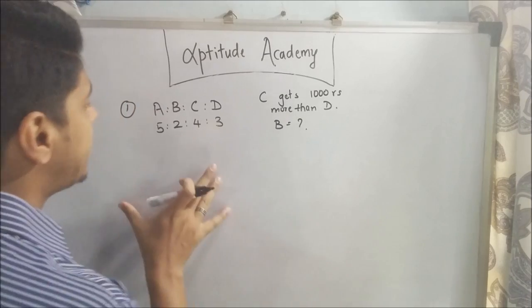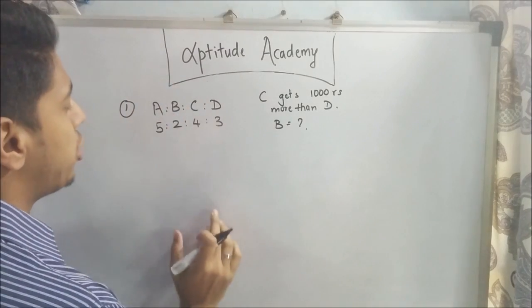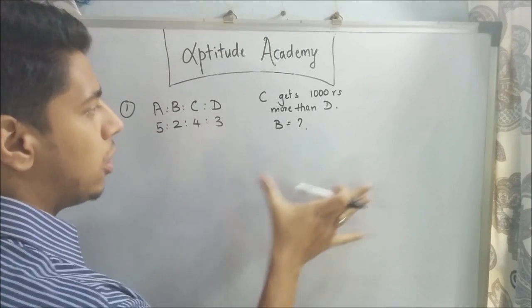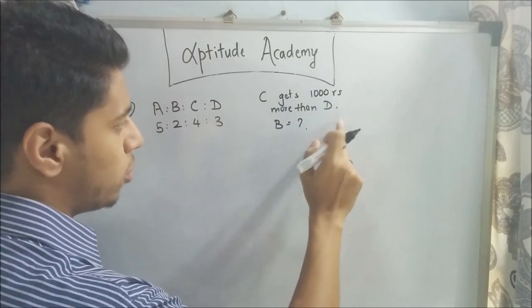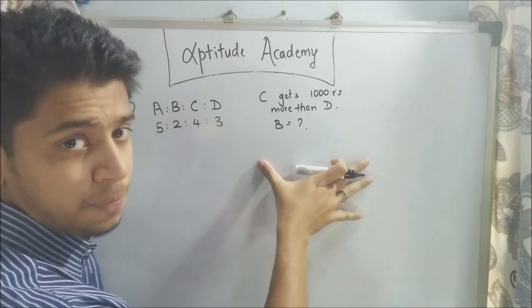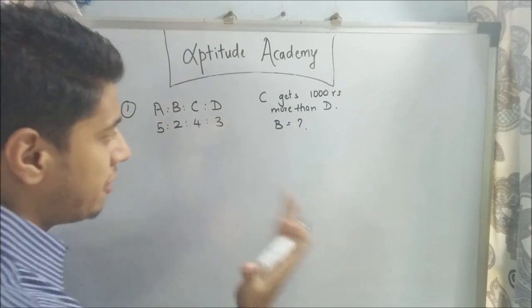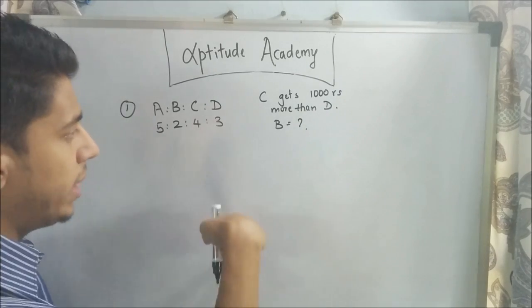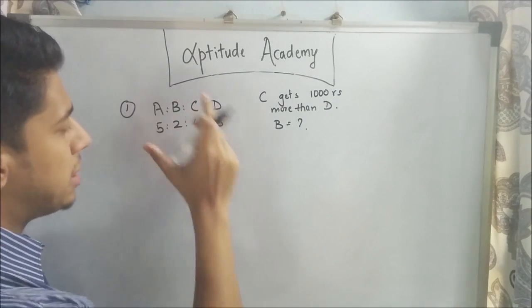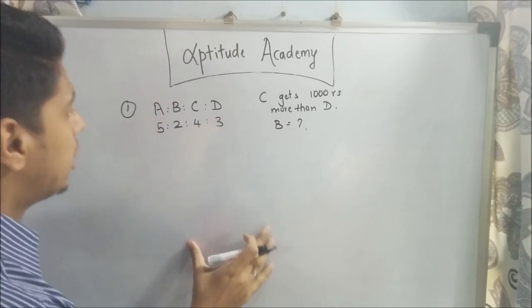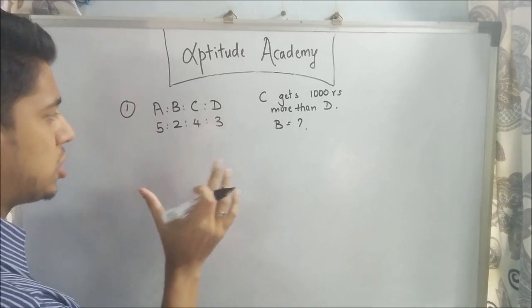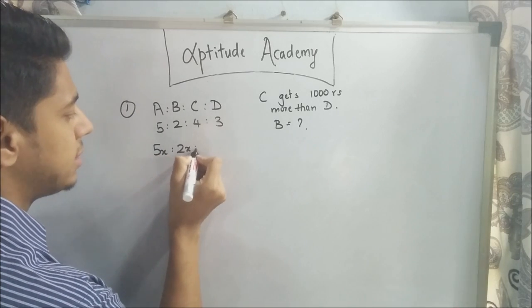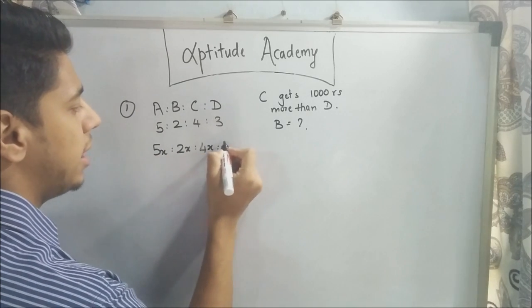For problem 1, a sum of money is distributed among A, B, C, and D in the ratio 5:2:4:3. C gets 1000 rupees more than D. If you remember my first lecture, I gave an example of a gold disc divided into parts. To solve this problem, think in those terms. We can write this as 5x:2x:4x:3x.